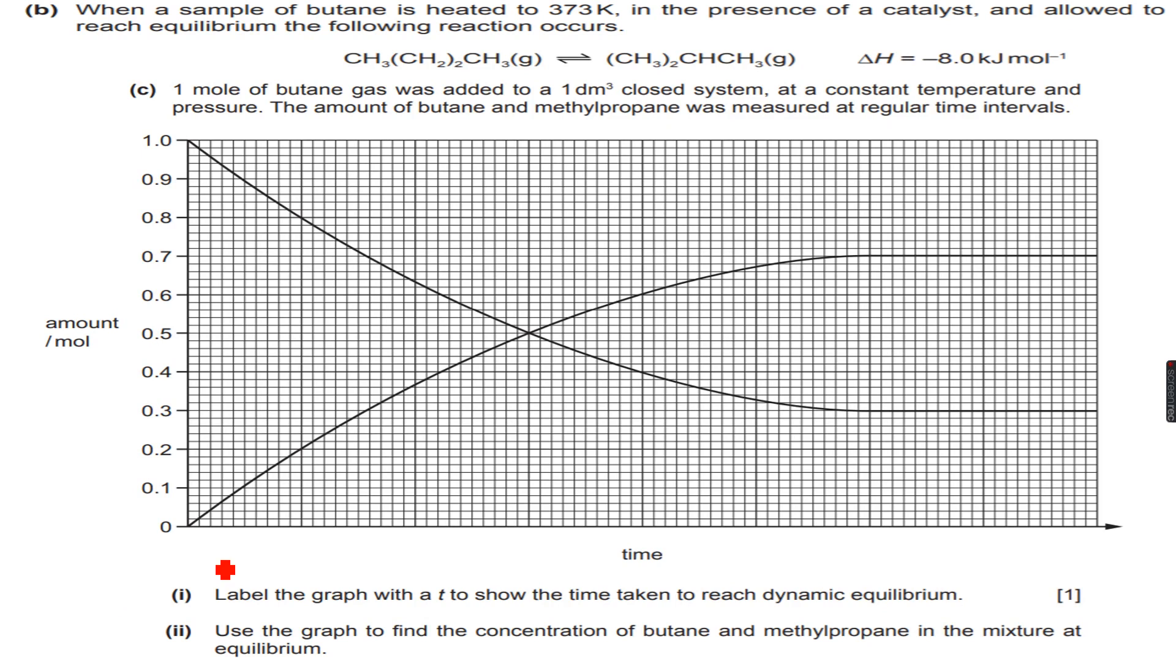Now we have this reaction in which CH3CH2CH2CH3, which is butane, gives us methylpropane. The question says when a sample of butane is heated to 373 Kelvin in the presence of a catalyst and allowed to reach equilibrium, the following reaction occurs: butane gives methylpropane in a reversible reaction, and this reaction is exothermic because the enthalpy change is negative.